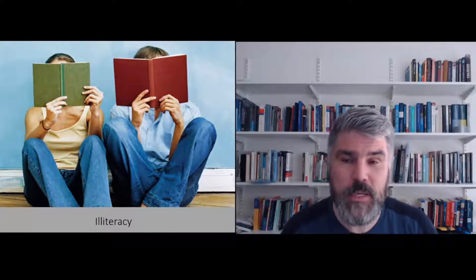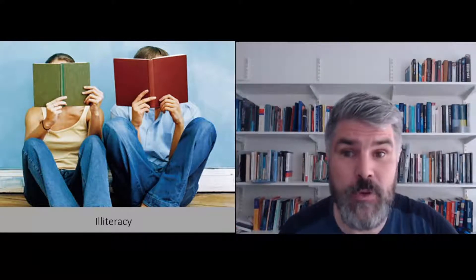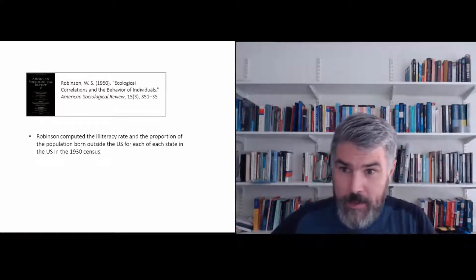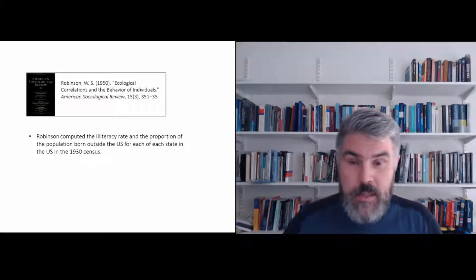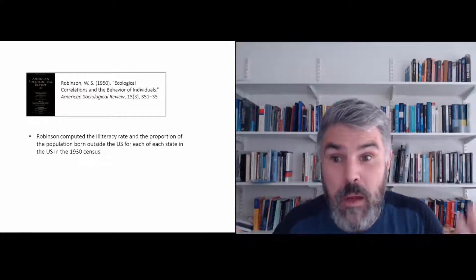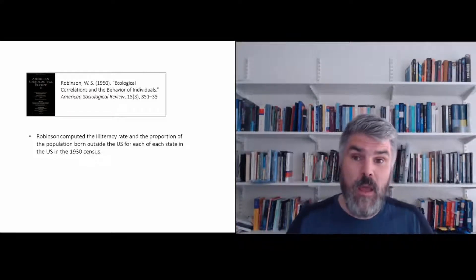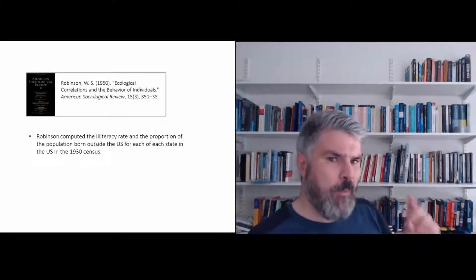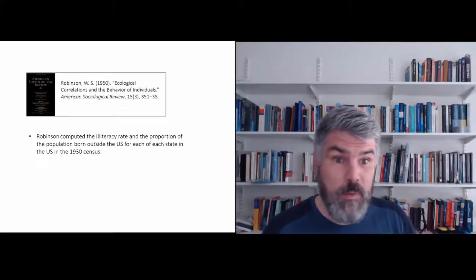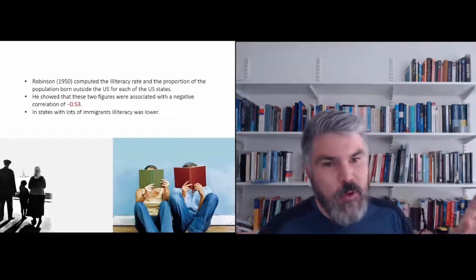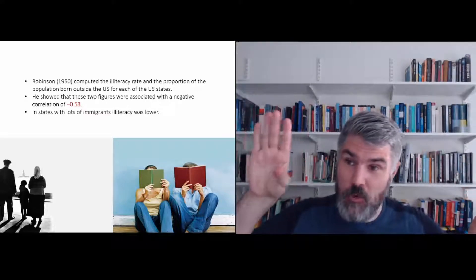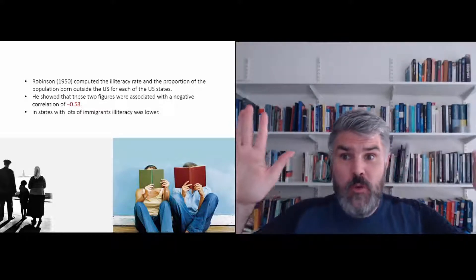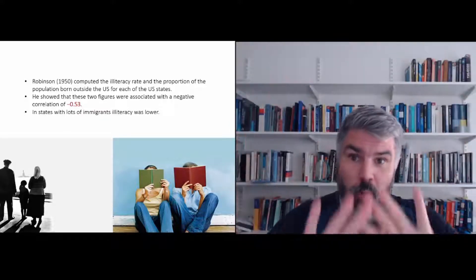So there's an example about illiteracy - how many people cannot read. There's an older paper by Robinson, published in the American Sociological Review. Robinson looked at the different states in the United States and looked at how many people cannot read in that state, the illiteracy rate. But Robinson also looked at the proportion of the population born outside of the US. So how many people in each of those states are immigrants? And when you take these two pieces of information, for each state you get two numbers.